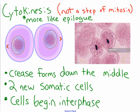Finally, just like we had a prologue, we also need an epilogue. The epilogue here is cytokinesis. The big thing in cytokinesis is that a crease forms down the middle of the cell and it is completely cut in half, so we now have two new cells. These cells are somatic and they start from square one — they're going to begin back again with interphase. Note that interphase is not a step of mitosis, and neither is cytokinesis, which comes after telophase.